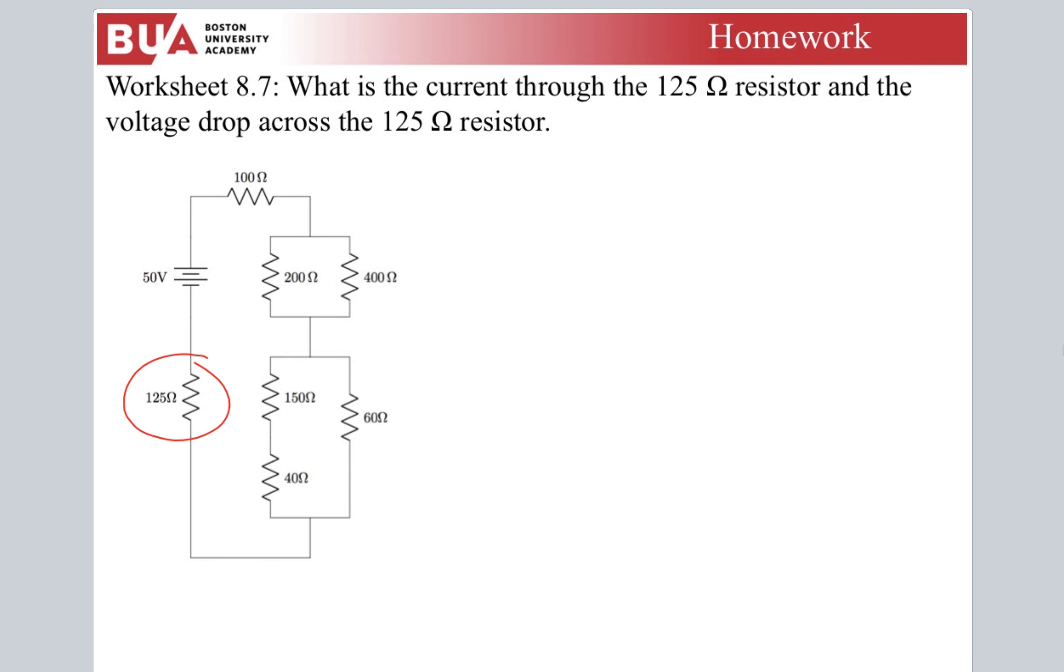What we have to do is reduce this down. First step is to combine, well actually the very first step is to label these. I'm going to call this R1, R2, R3, R4, R5, R6, and R7 that we are interested in. This I will just call V. We need to combine these parallel circuits first.